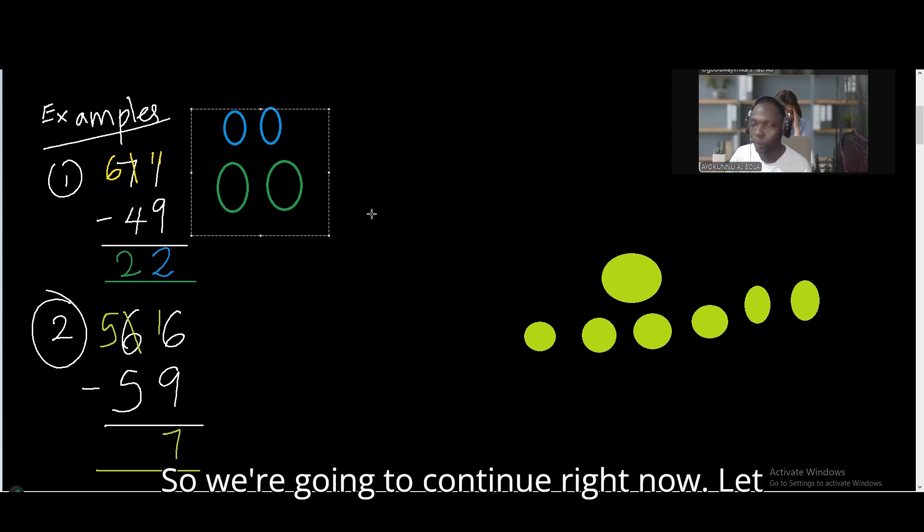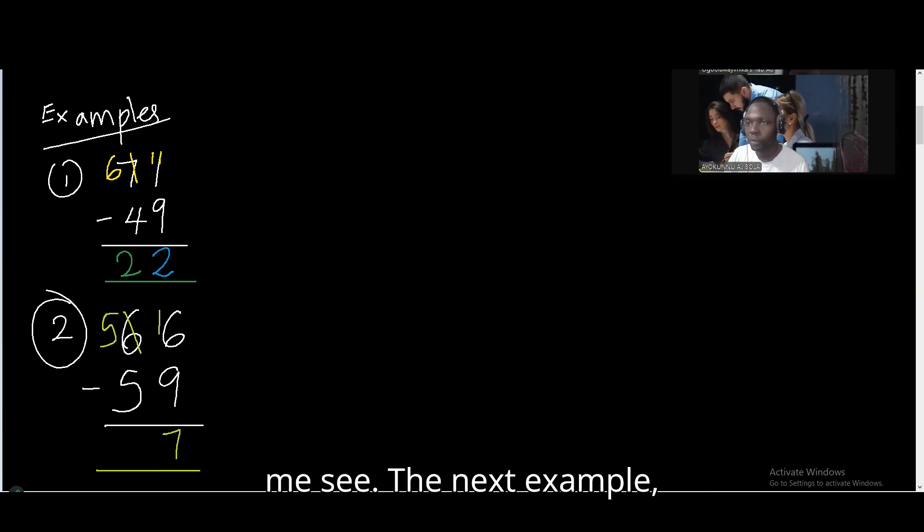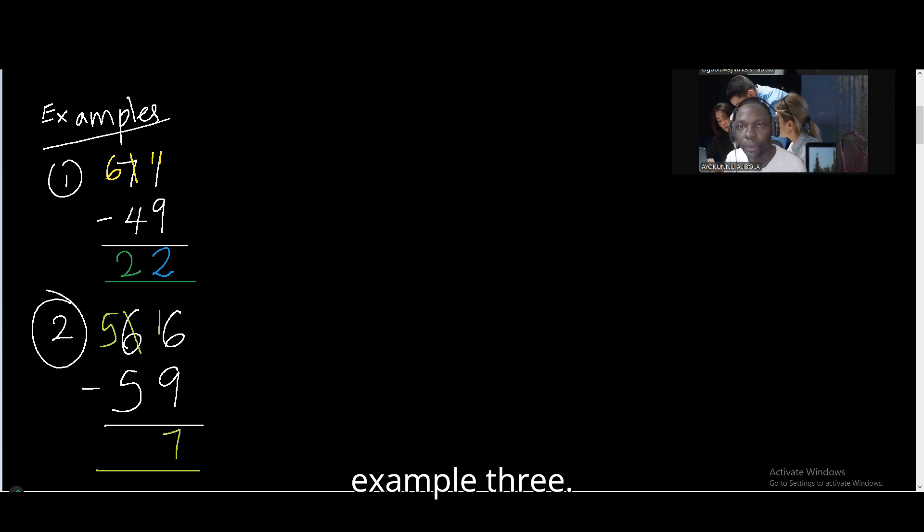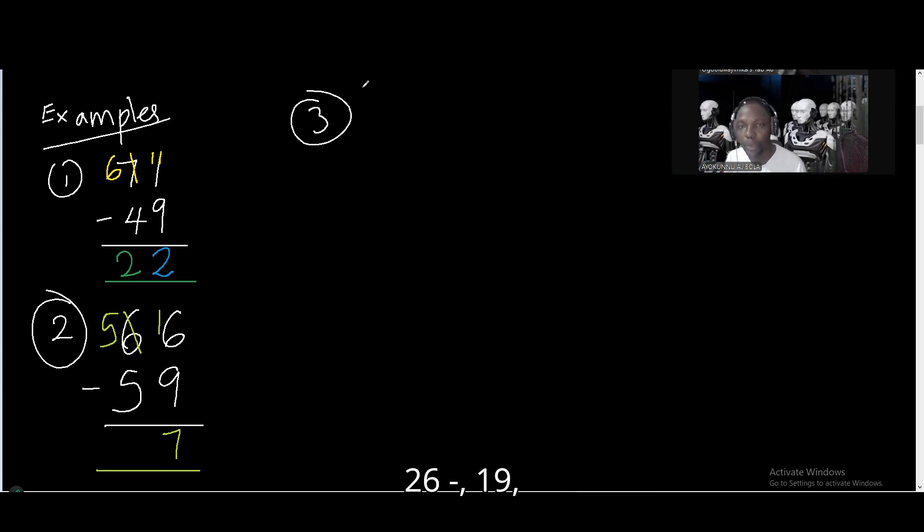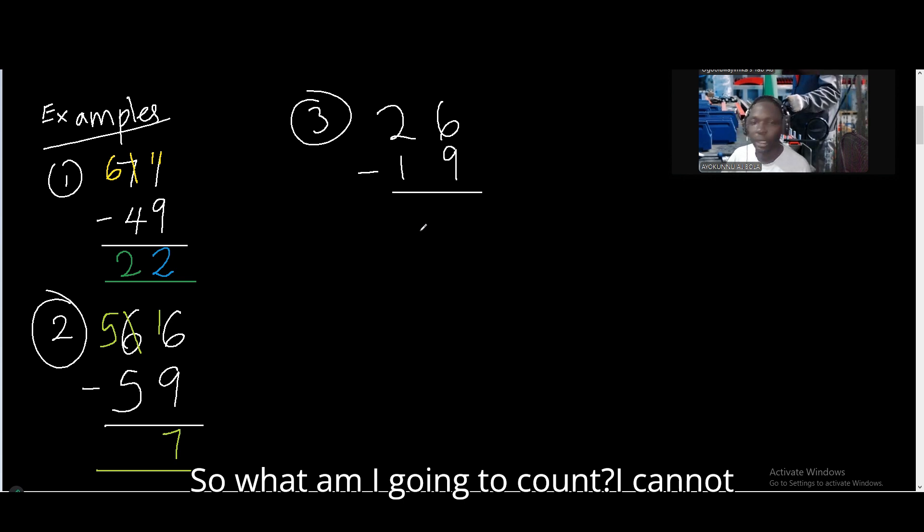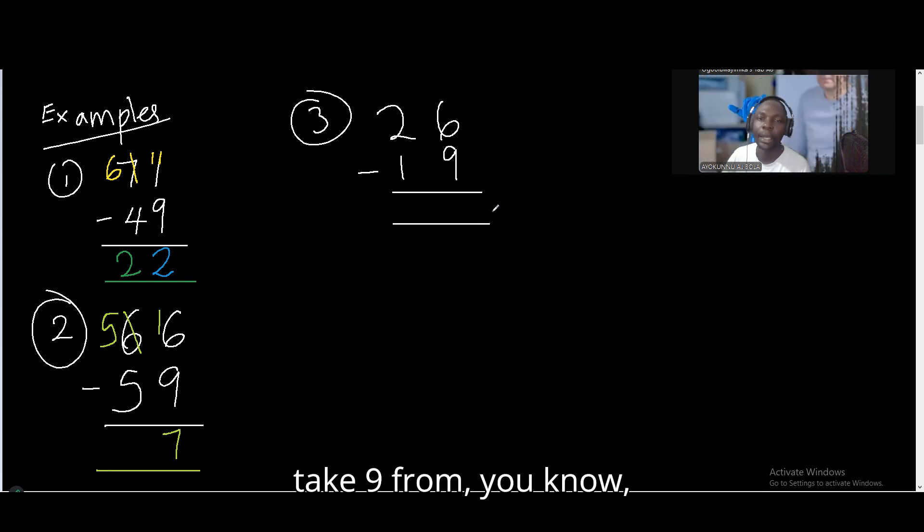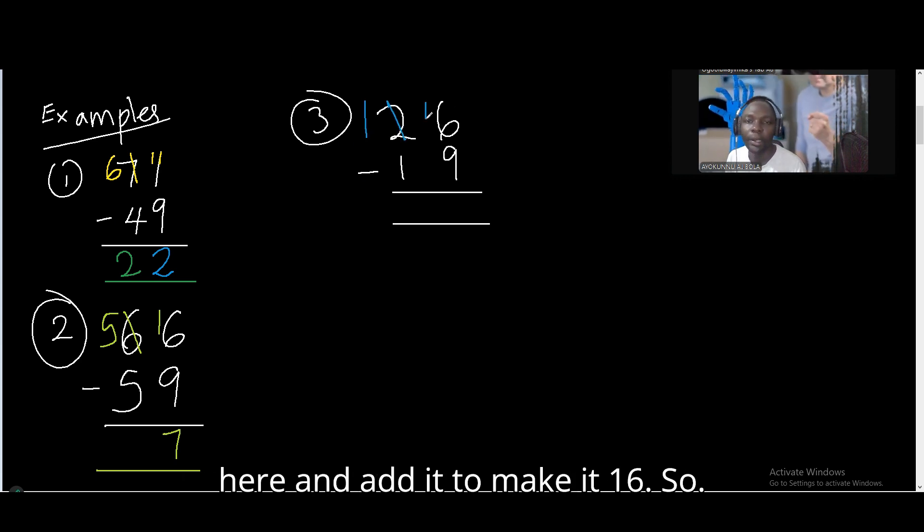We're going to continue right now. The next example, example 3. For example 3, I have 26 minus 19. So what am I going to count? I cannot take 9 from 6. I have to take away 1 from here and make it 16.